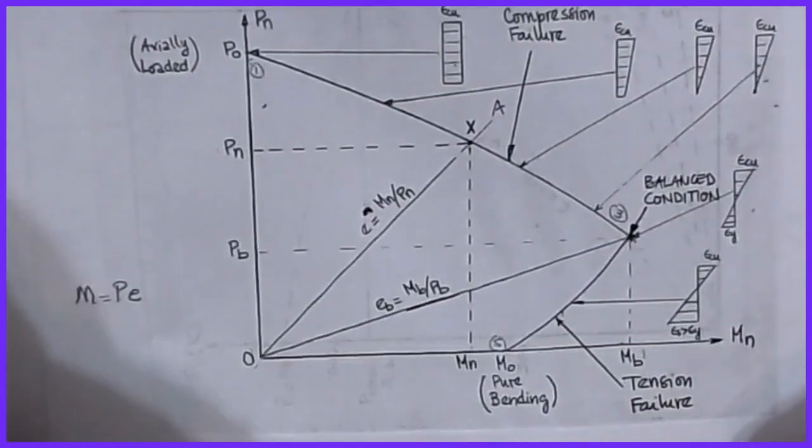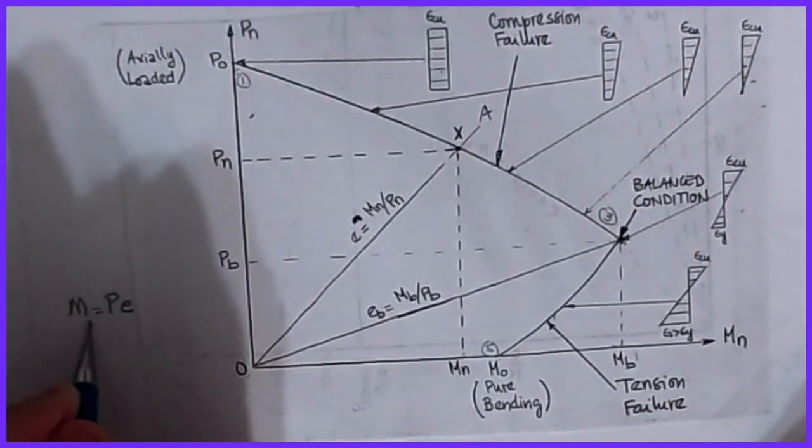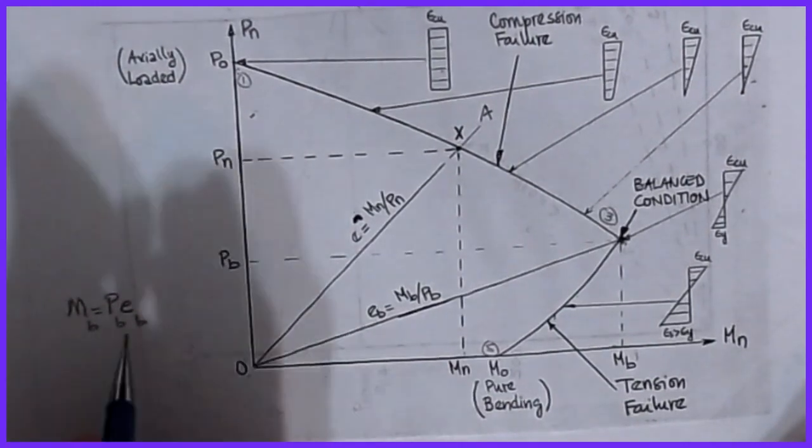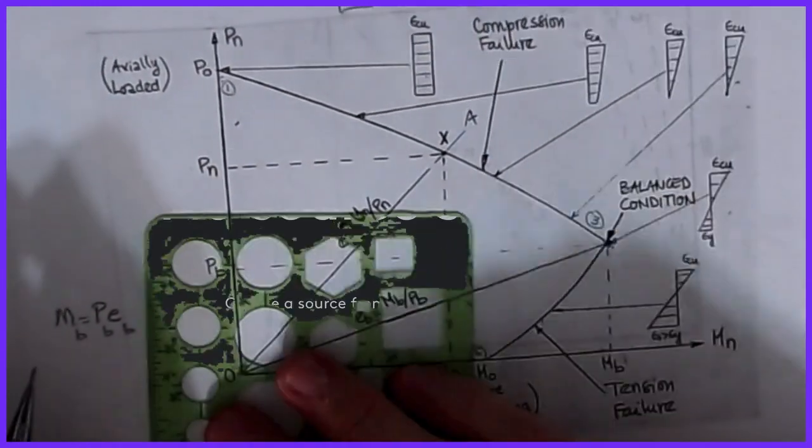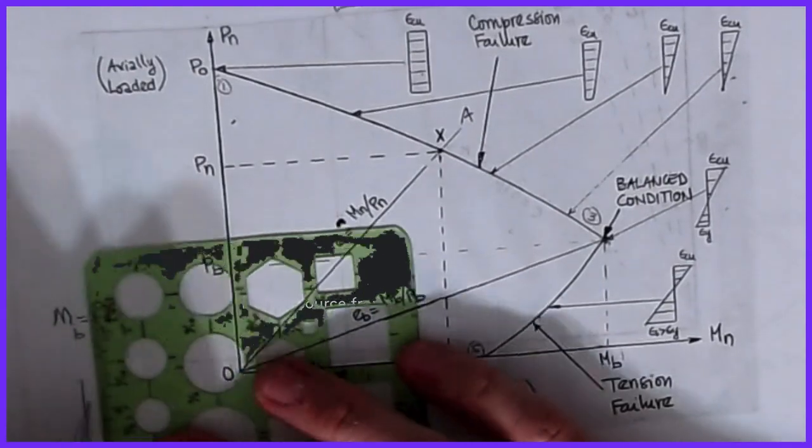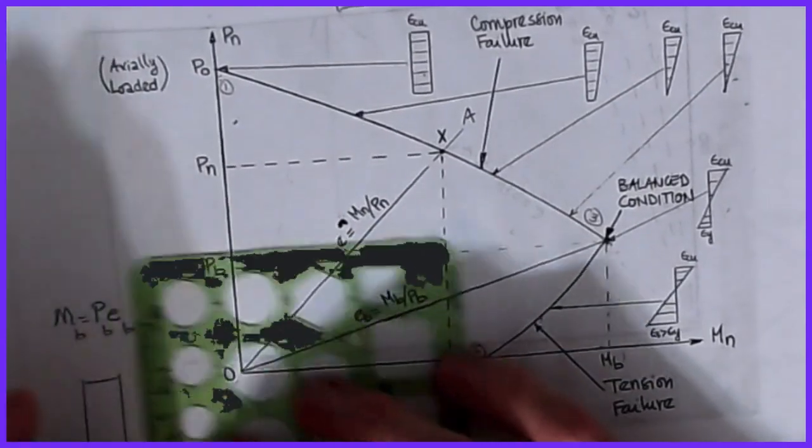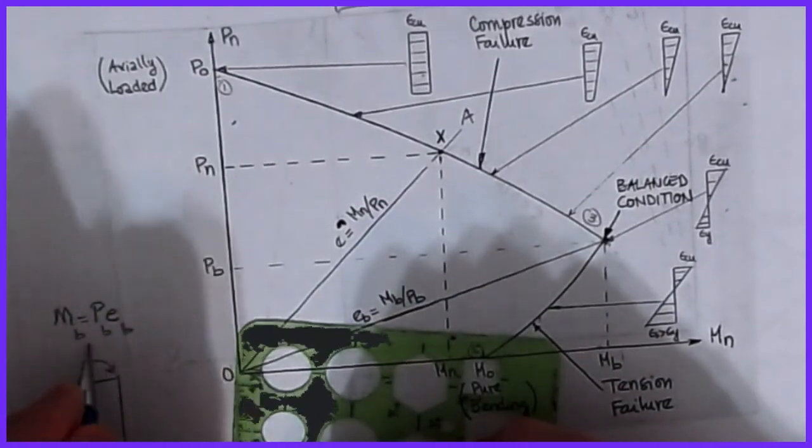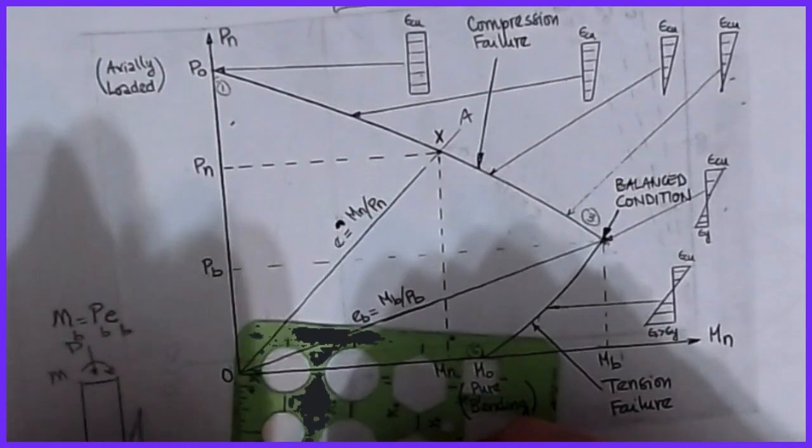What happens in here is that from this point zero out to the points on this curve, we have a series of lines. What happens is we know nominally speaking that a moment is equal to P times e.